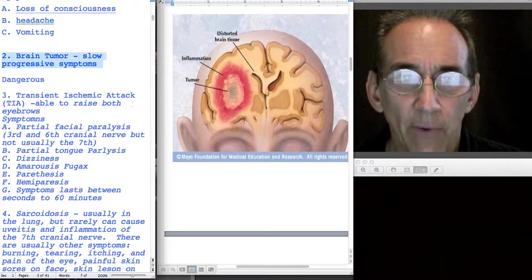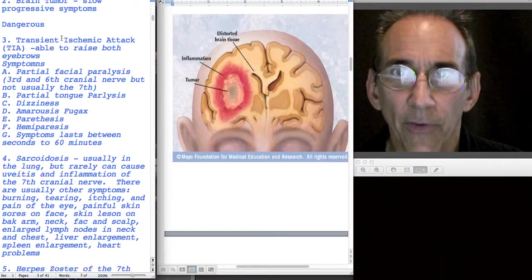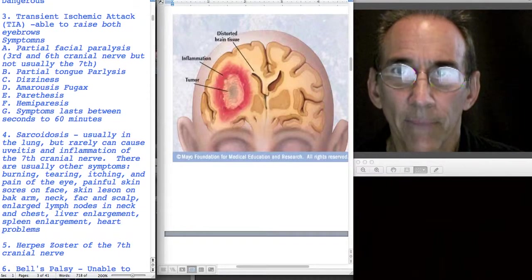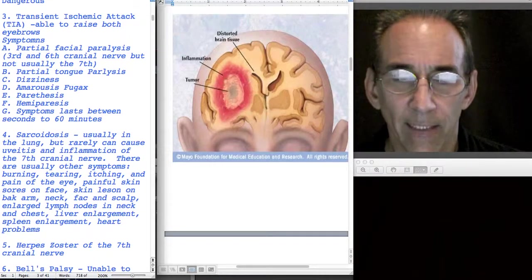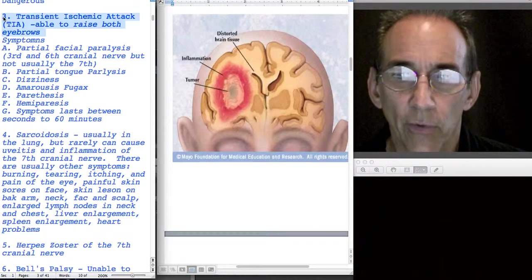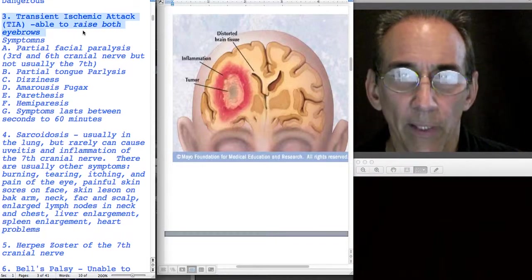There's a bunch of other things that could happen that might have the same symptoms of a drooping face, or similar but not exact. Like I said, Bell's palsy, the seventh cranial nerve is pretty specific to Bell's palsy.